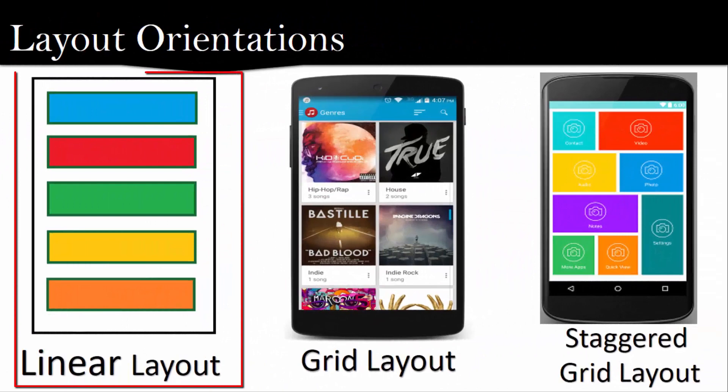The first type of layout orientation is linear layout orientation. Linear layout itself has been divided into two types: vertical linear layout orientation and horizontal linear layout orientation. As you can see on the display, it is an example of vertical linear layout orientation because each of the items has been displayed one below another in form of a list. Similarly, we can implement it in the form of horizontal linear layout orientation.